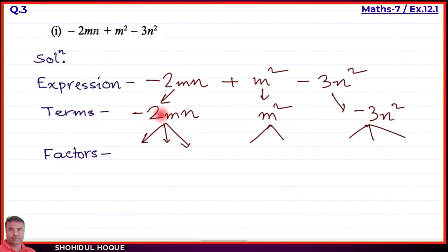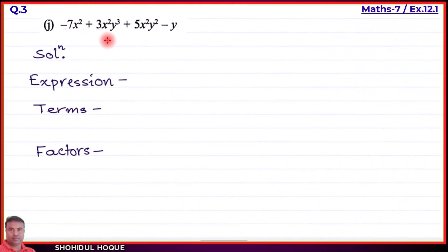The second term m² has factors m and m. The third term -3n² has factors -3, n, and n. Part (i) is solved. Last question is part (j).